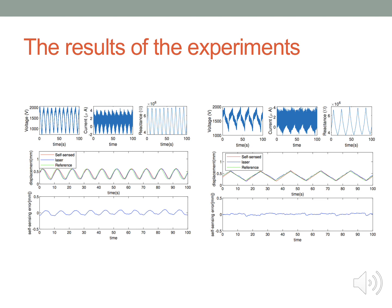Here are the results I got from the experiment. The left-hand side is a sine wave. The right-hand side is a triangular input. The first row are the values of voltage, current, and reactance. The middle row are the values of self-sensing model, laser sensor, and reference signal. As we can see from the results, the three values are very similar, which means the model and controller work well for the DE material.